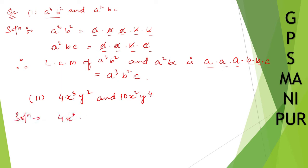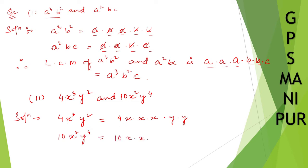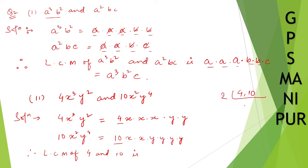4x cube y square I can write as 4 into x into x into x — so x cube means three x's — and y square: y into y. And 10x square y to the power four is 10 into x into x into y into y into y into y. First, find the LCM of the two coefficients: LCM of 4 and 10 is 20.